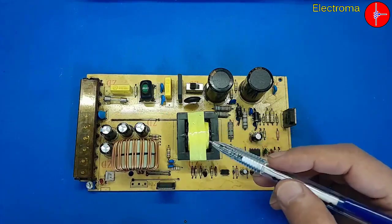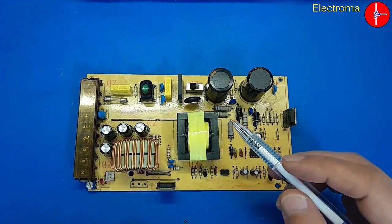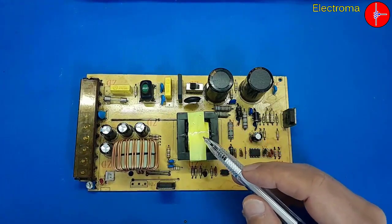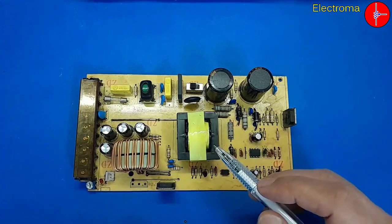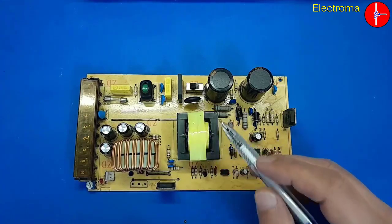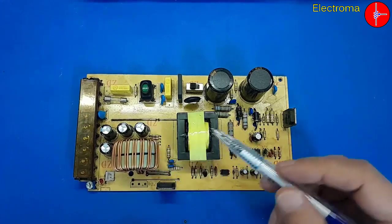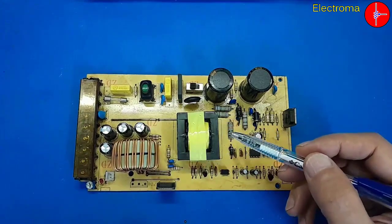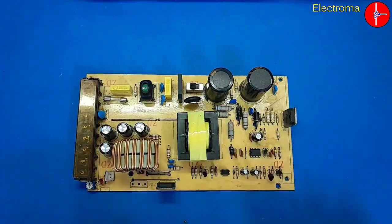I want to tell you three things about this circuit. The first thing is about the transformer. This is the transformer of this device which is responsible for producing the accurate voltage. There are several coils inside this transformer.